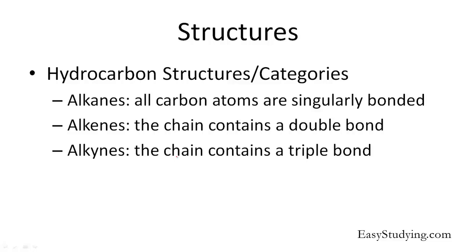So we'll start with the structures. Here we have the hydrocarbon structures and categories, which include the basic alkanes, alkenes, and alkynes. In alkanes, all carbon atoms are singly bonded — they all have a single bond to each other. In alkenes, the chain contains one double bond. And in alkynes, there will be a triple bond in the carbon chain.